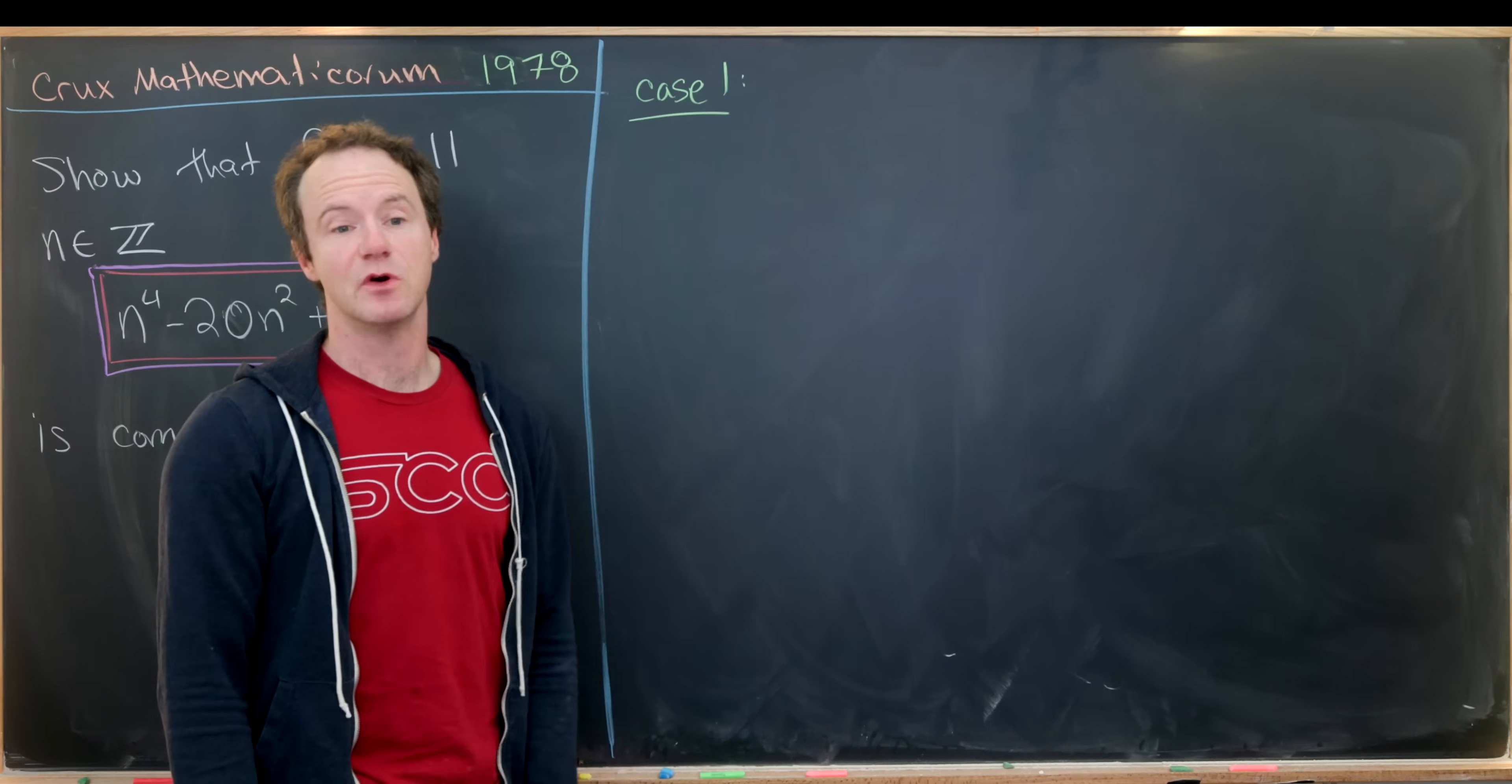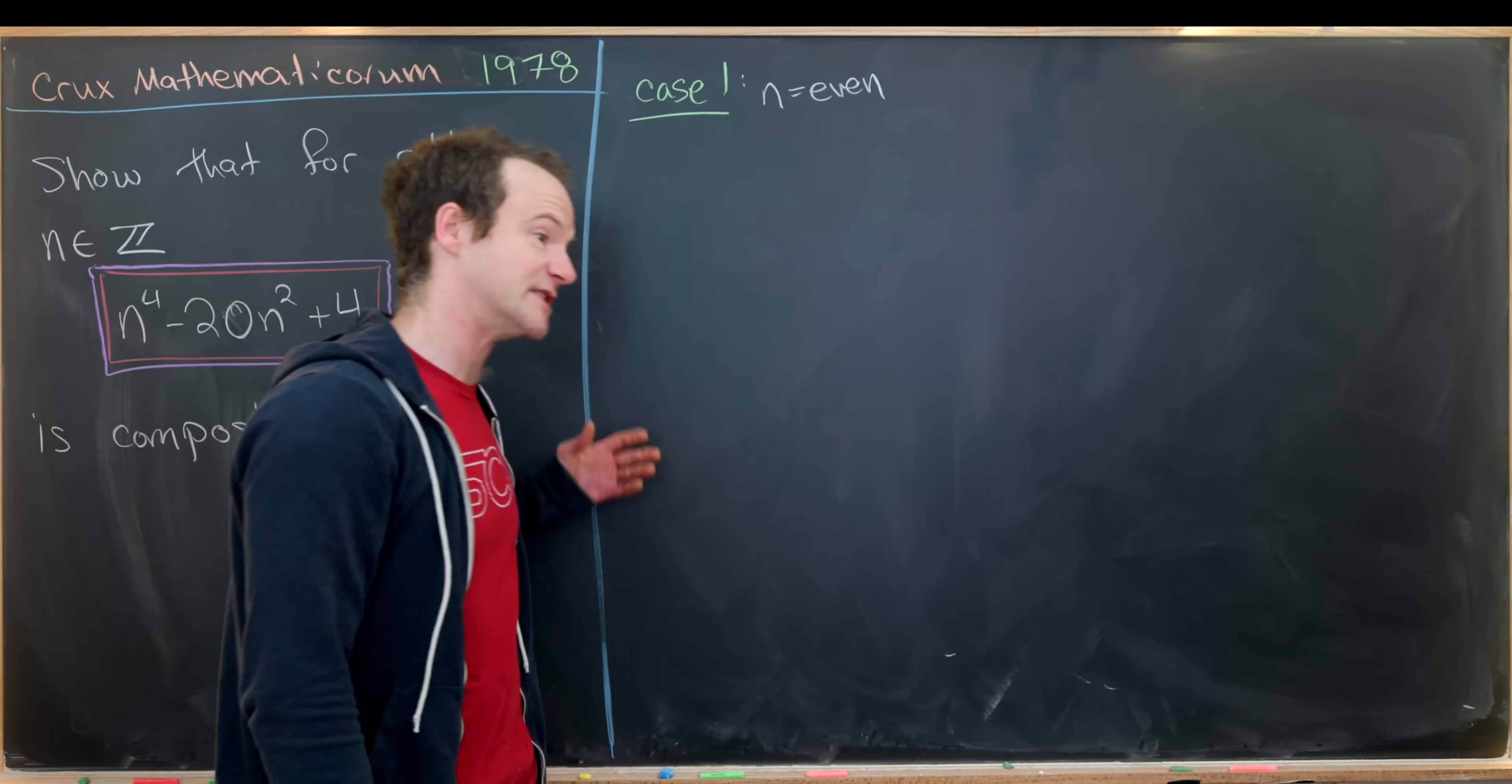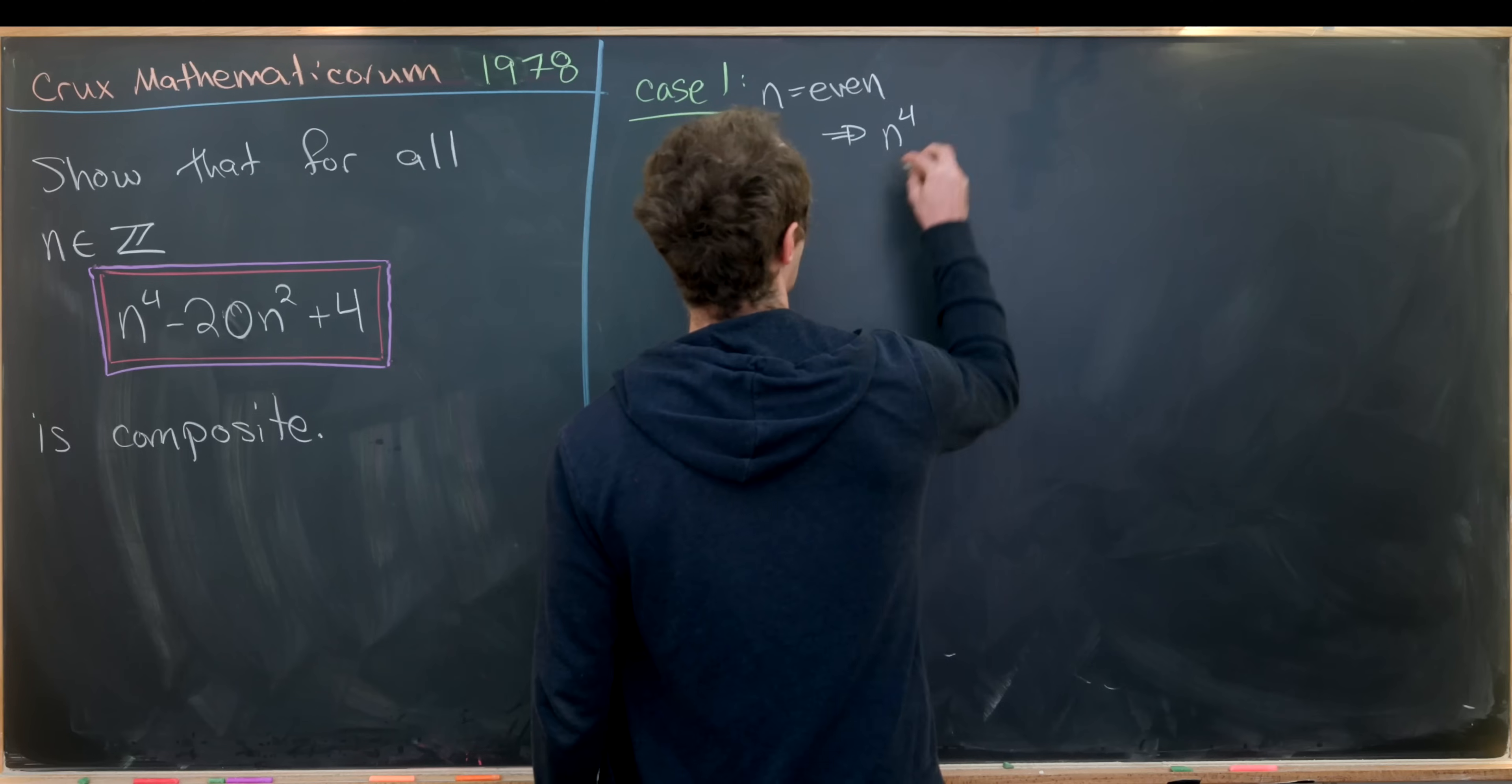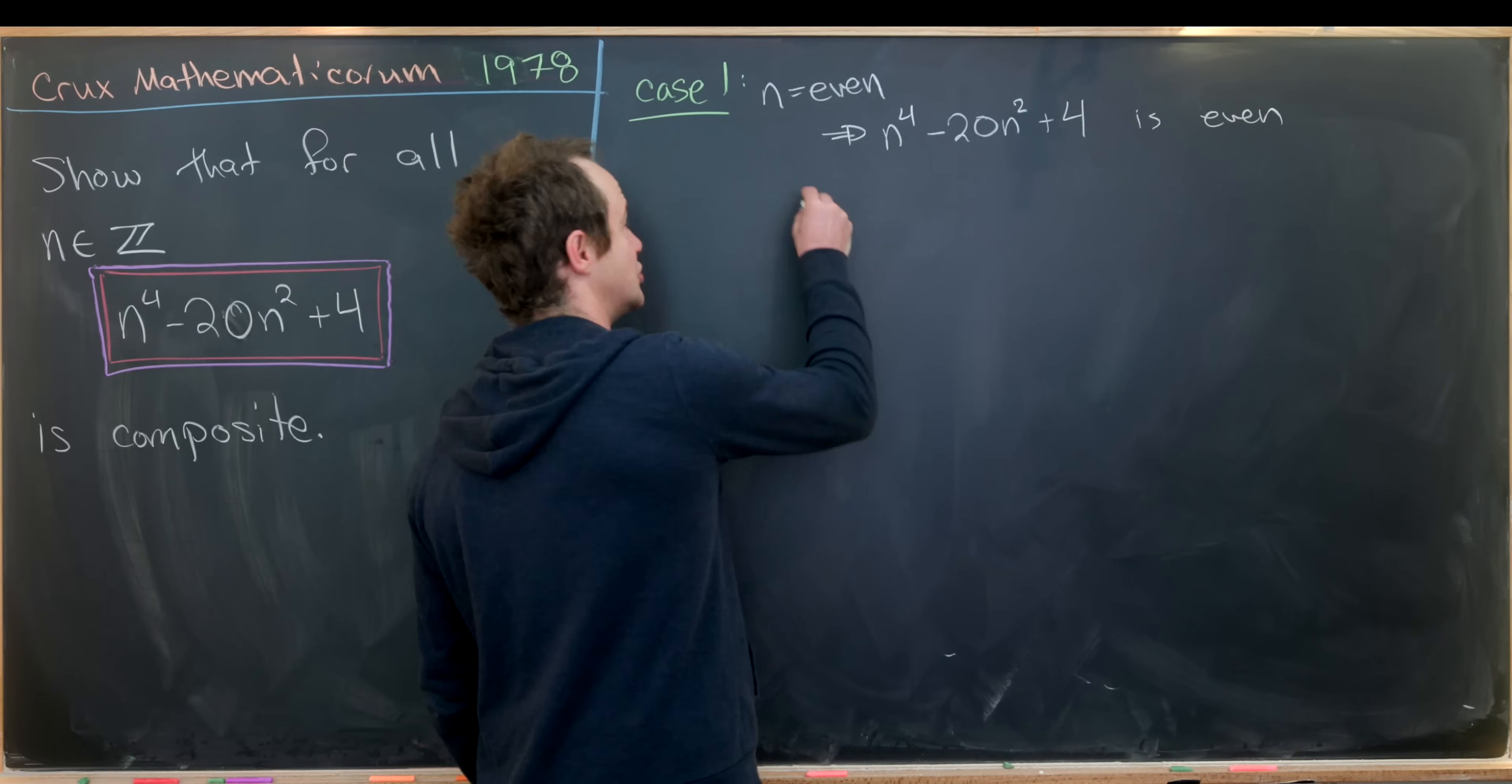Let's say our first case is when n is even. I'd like to point out very quickly that this case only allows for a certain prime as the output as any possibility at all. That's because if n is even, then n to the fourth is even, and thus n to the fourth minus 20n squared plus 4 is also even because it's a sum of even numbers. But there's only a single even prime and that's the number 2.